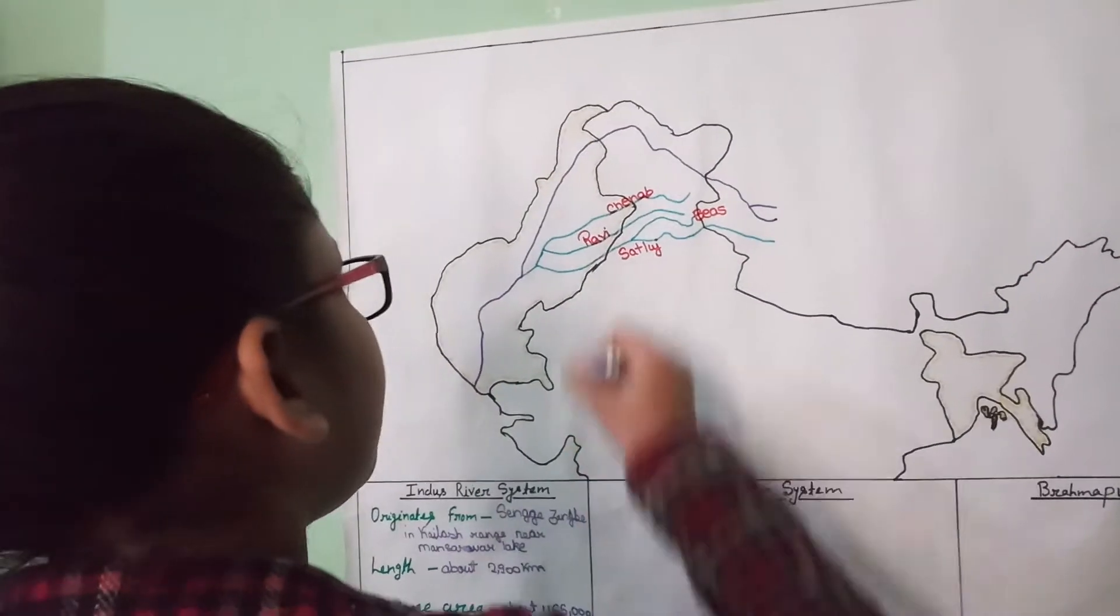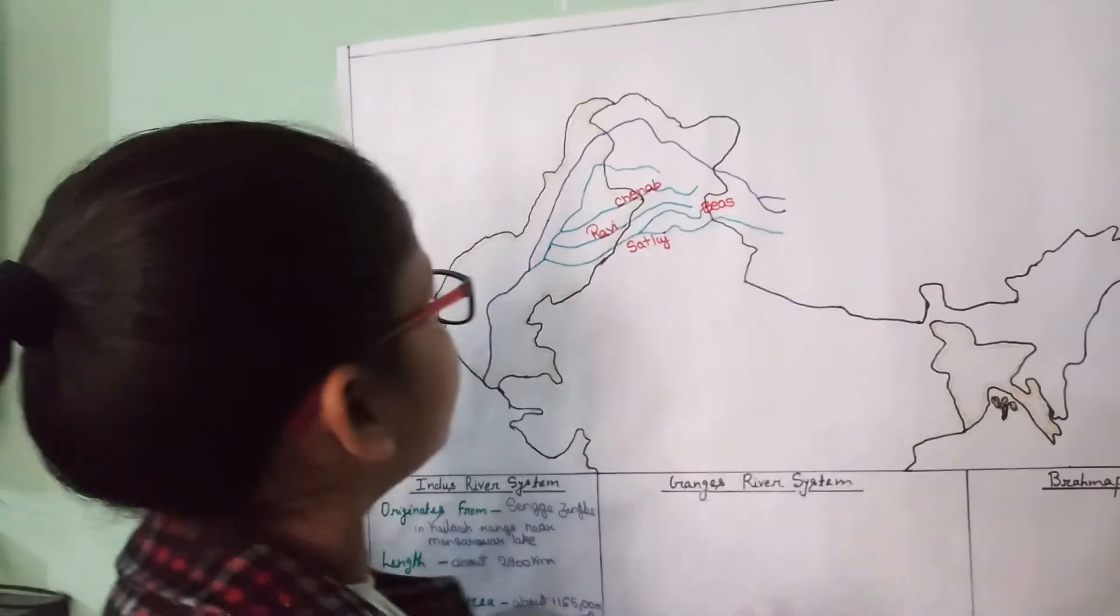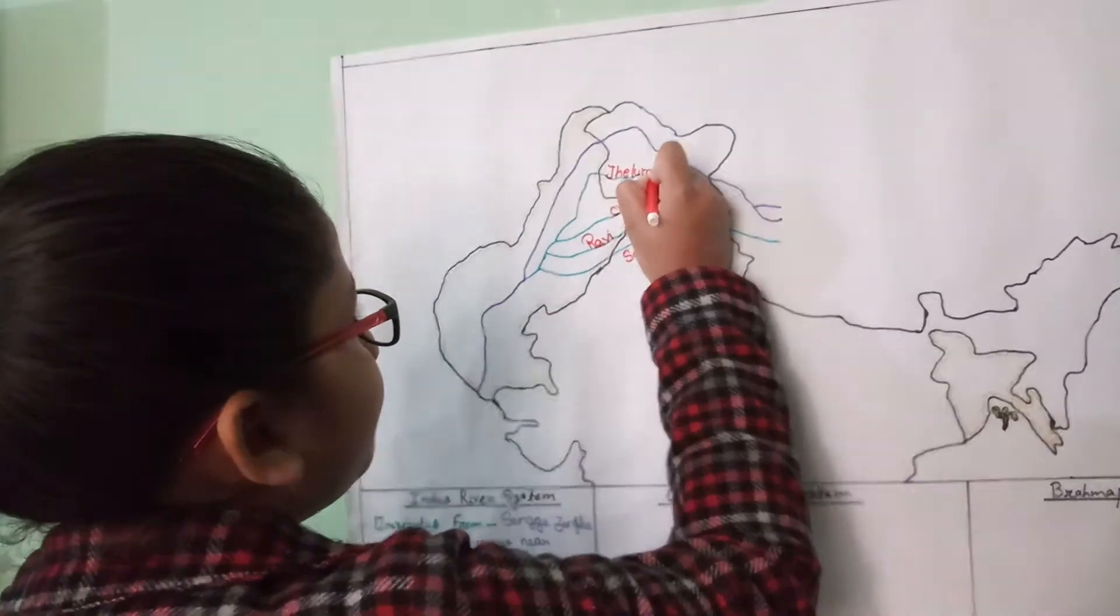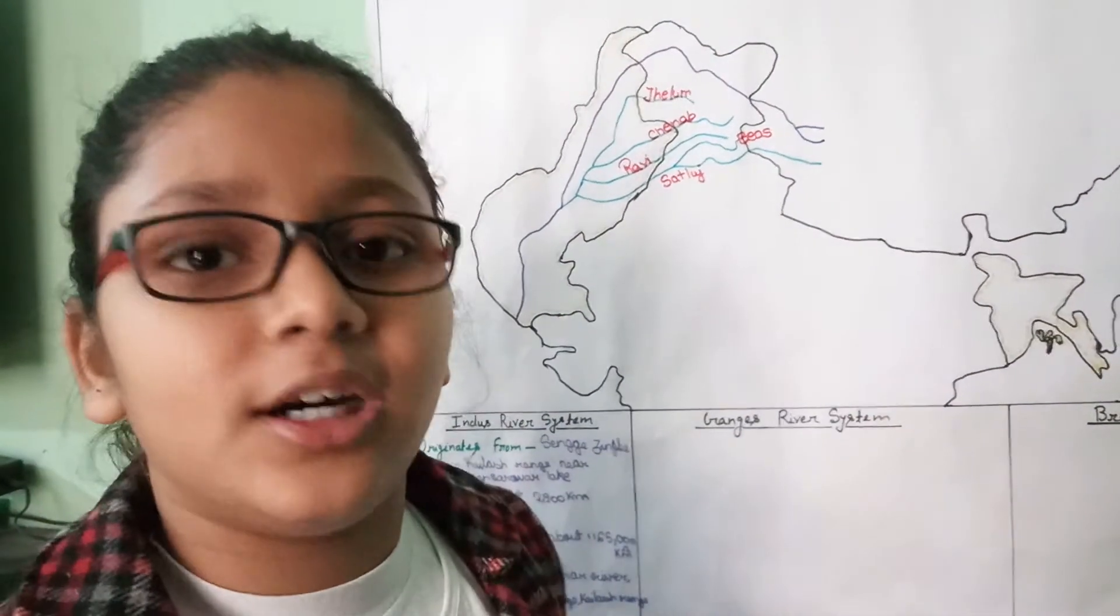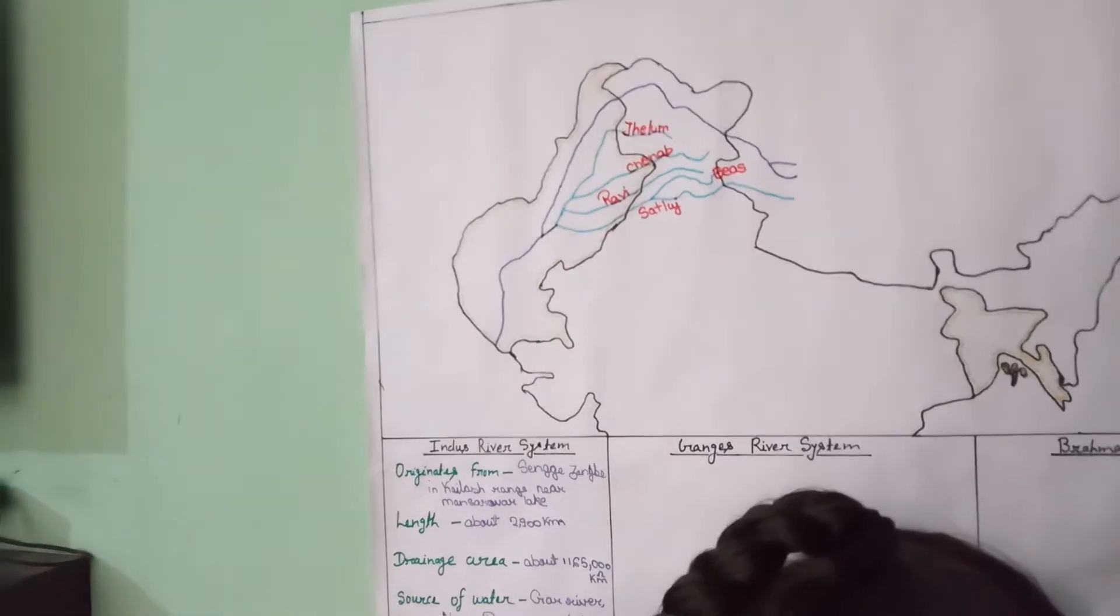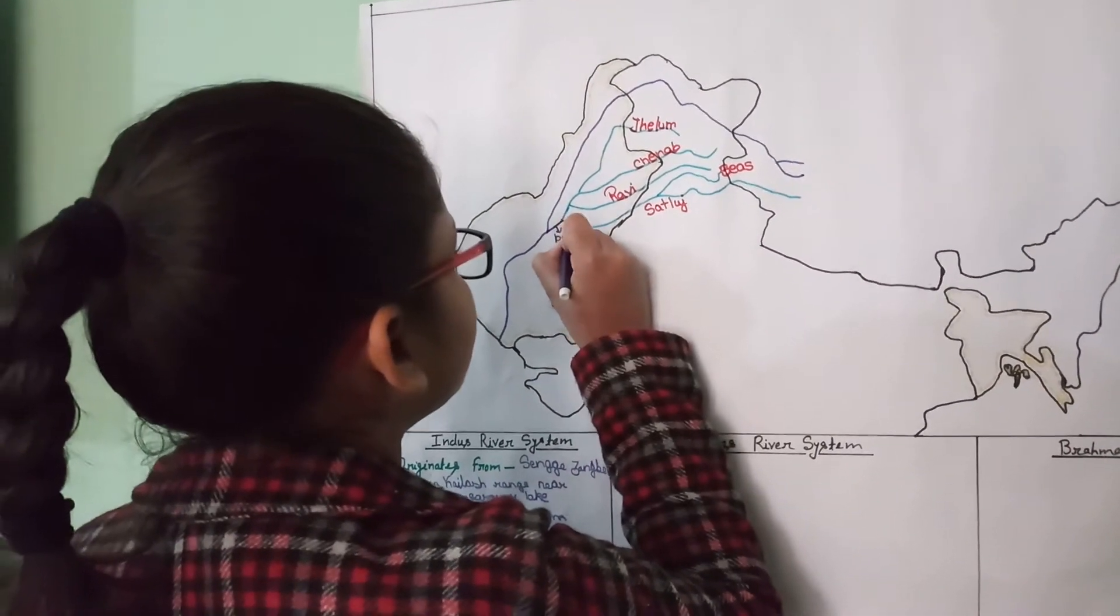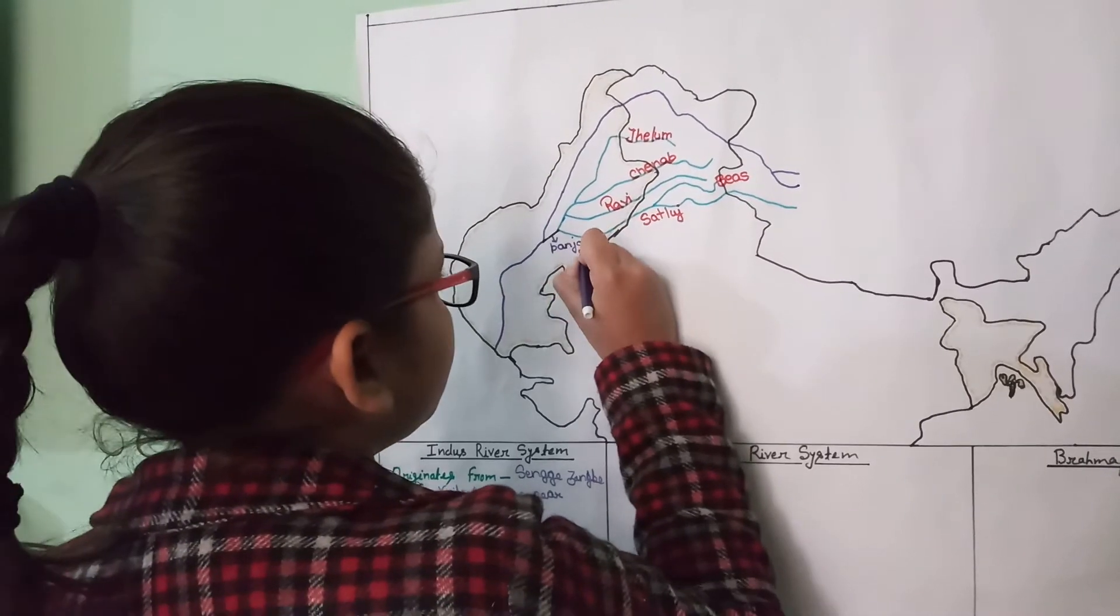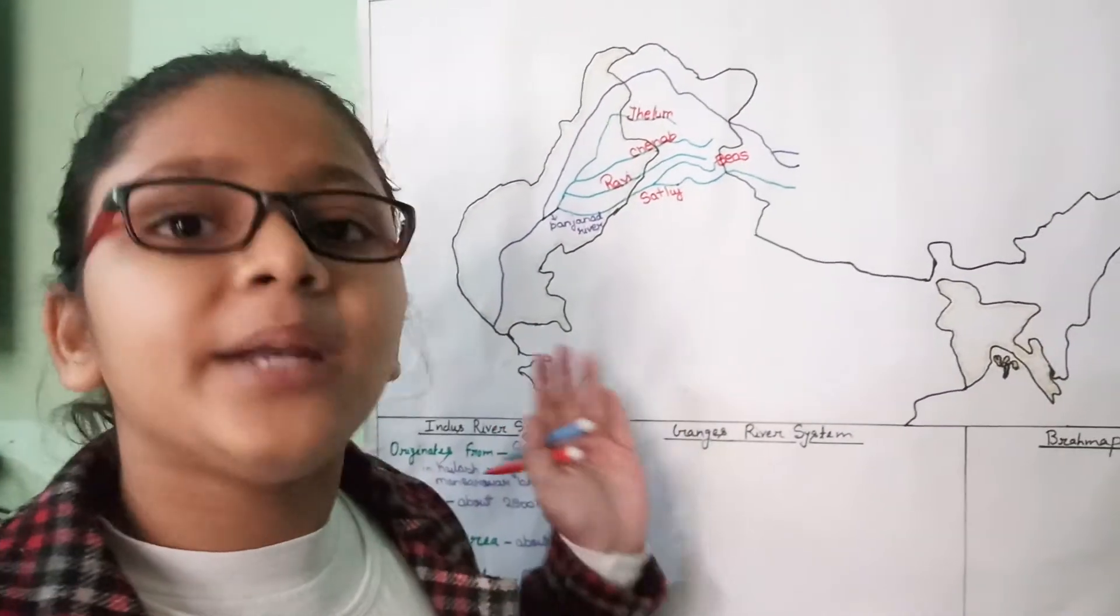Then this is Jhelum. So when these five rivers join together, they form a river which is the Panjnad River. So it joins the Indus River near Mithankot.